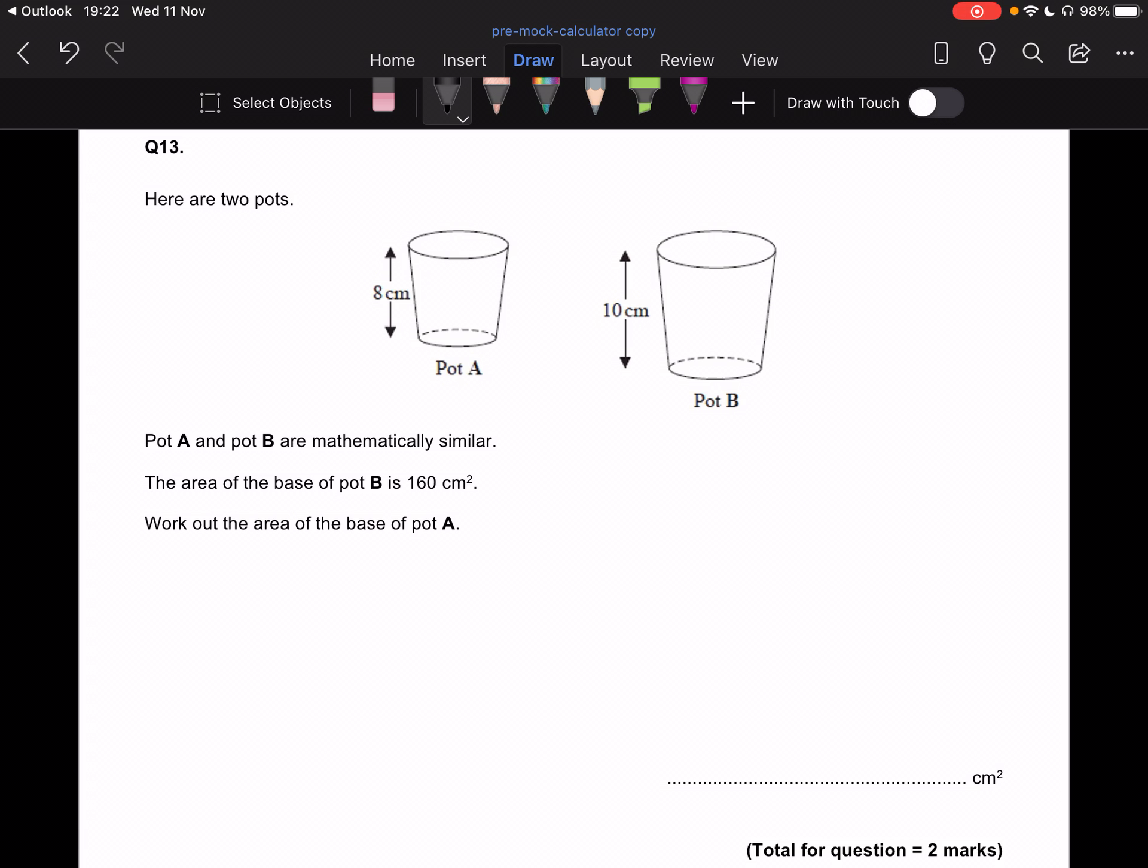You notice that we've got the height of each pot annotated on the diagram. It says pot A and pot B are mathematically similar, that means they're enlargements of each other and the area of the base of pot B is 160 centimeters squared. So I'm going to do that here and I want to work out the area of the base of pot A.